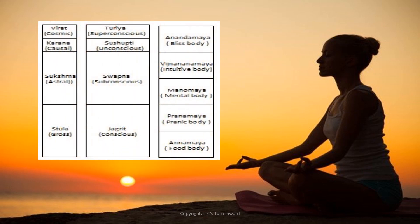Here we can see a chart showing how the four states of consciousness relate to the five layers of the human body, studied together. I will make another video about these five layers, known as the Koshas: Annamayakosha, Pranamayakosha, Manamayakosha, Vigyanamayakosha, and Anandamayakosha.